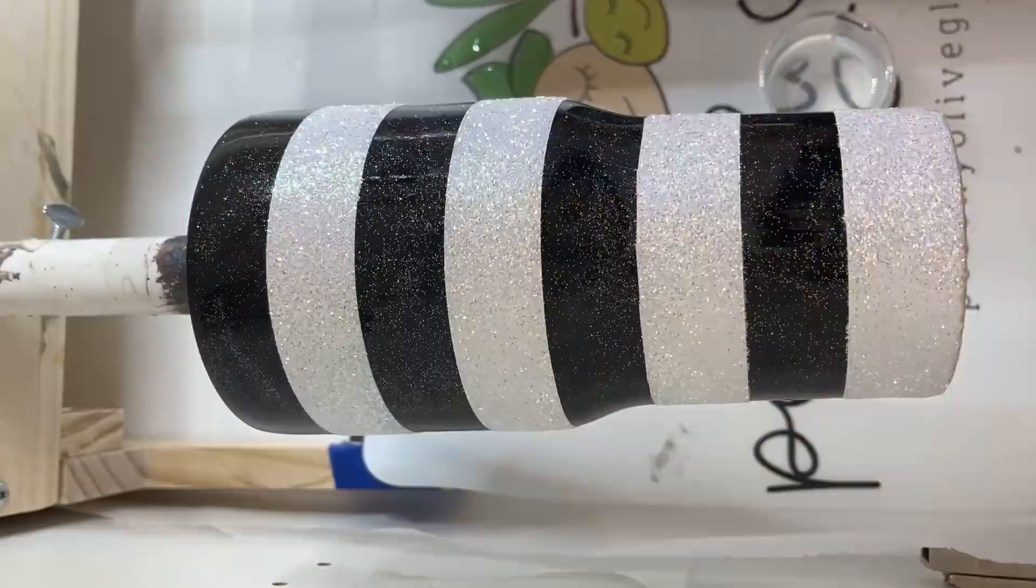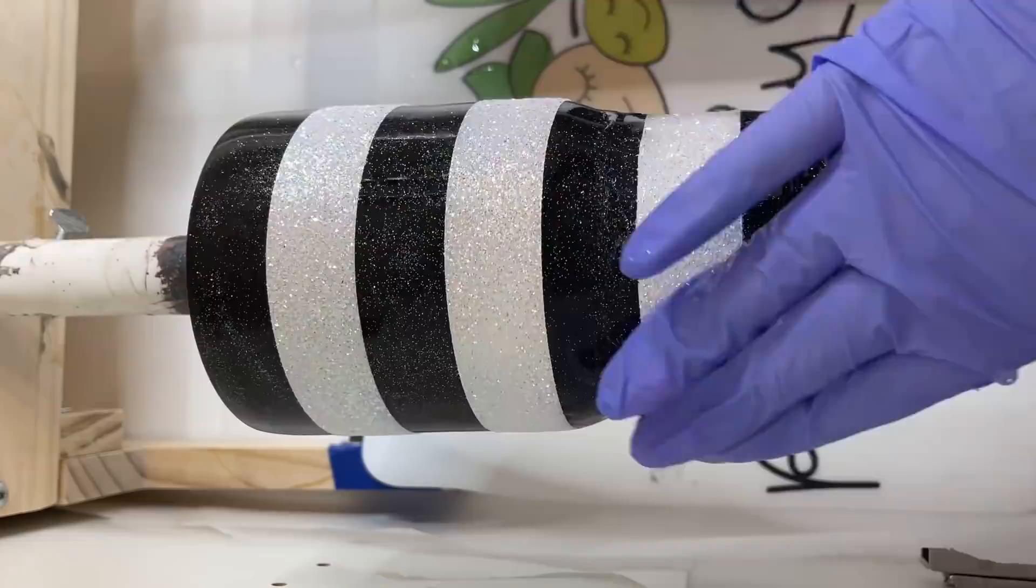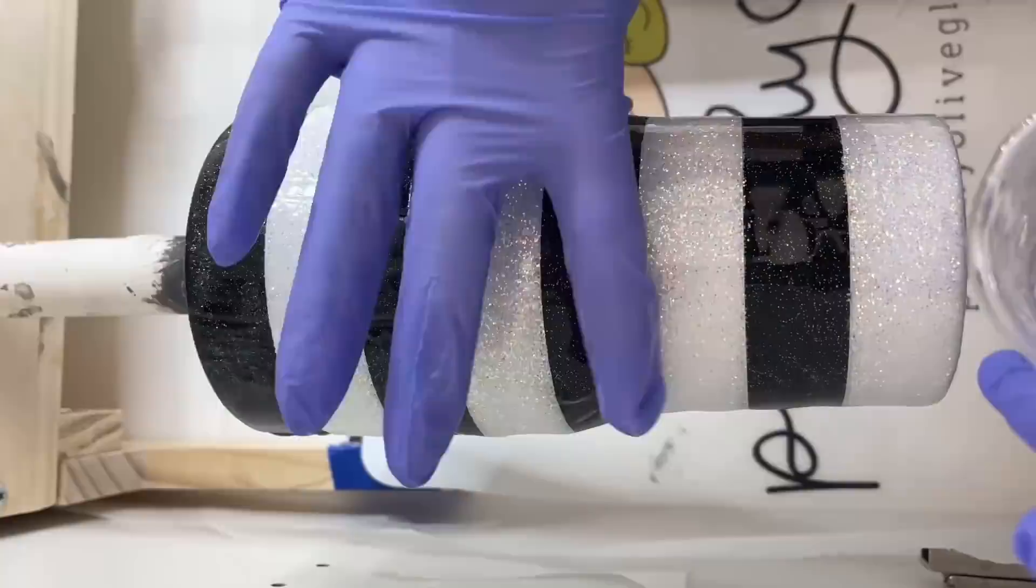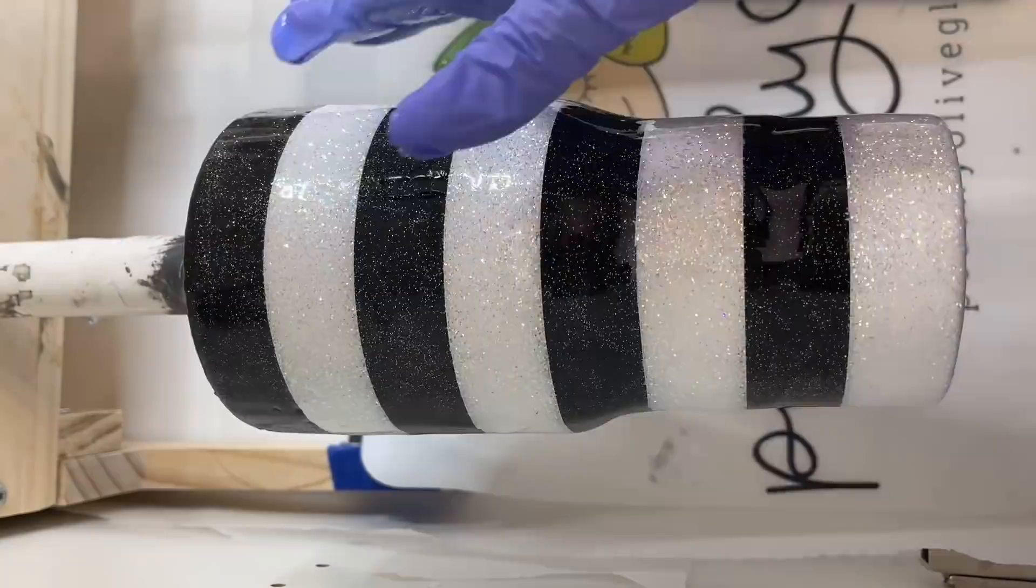The reason why I did the white glitter after the black is because I figured if any of this white glitter shifts around, it's not going to be as big of a deal as if black glitter shifted around into the white. It won't be as noticeable.